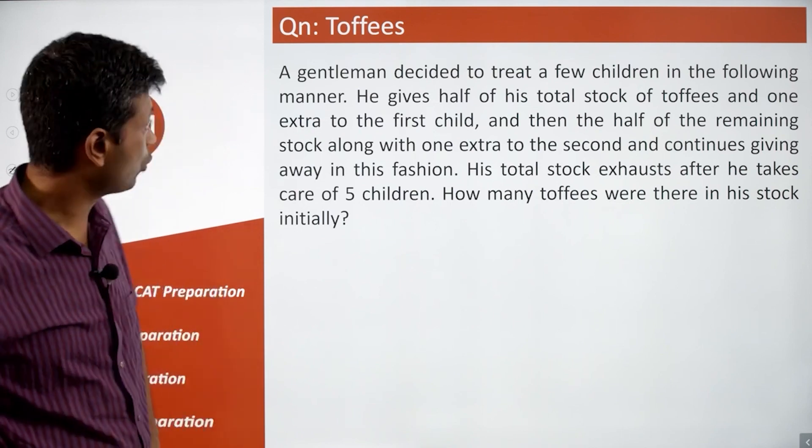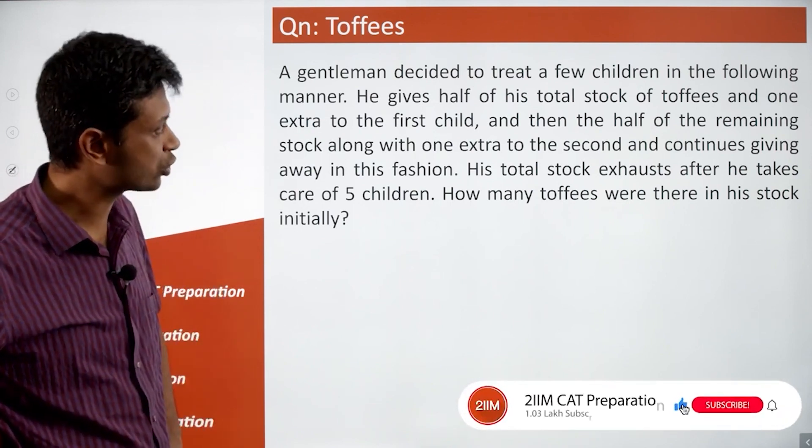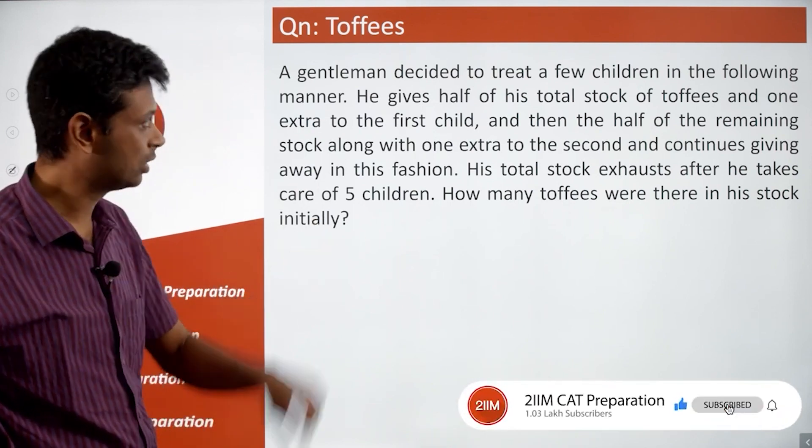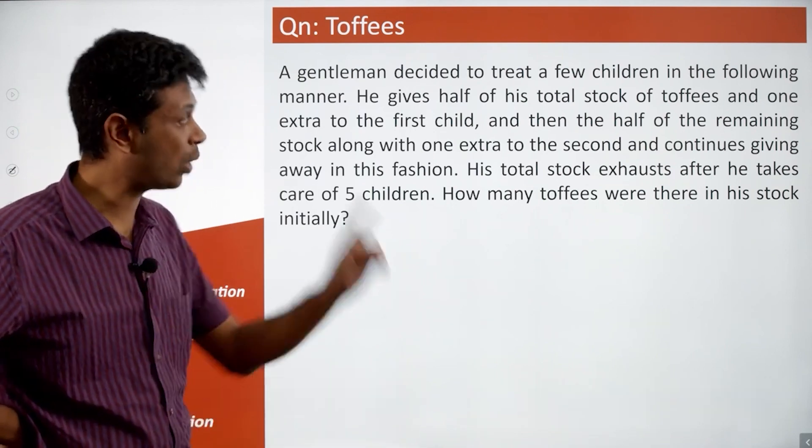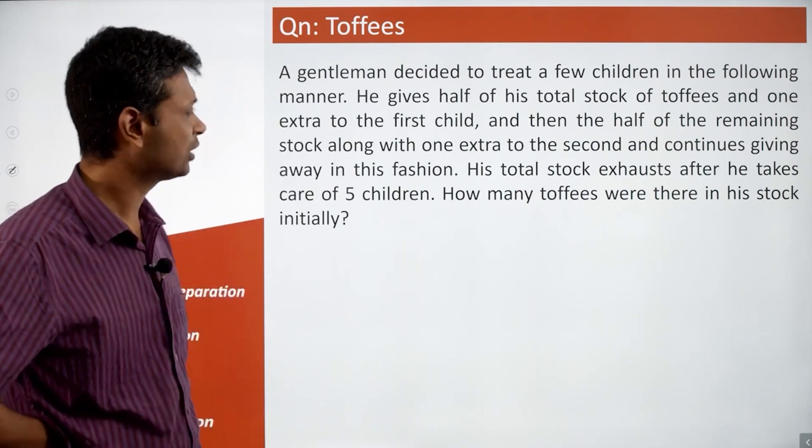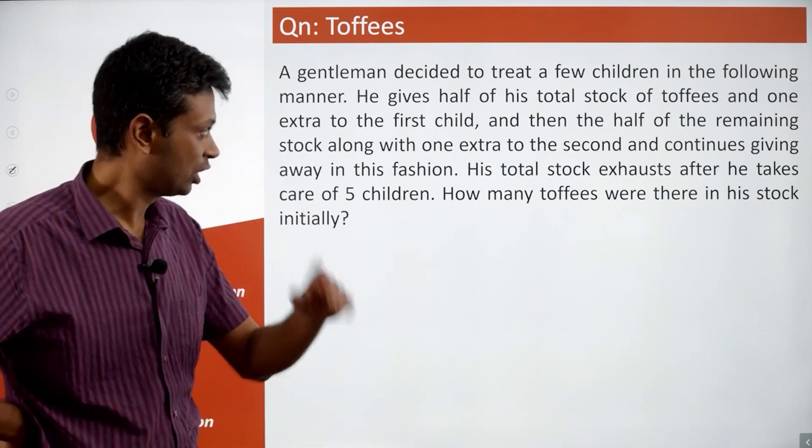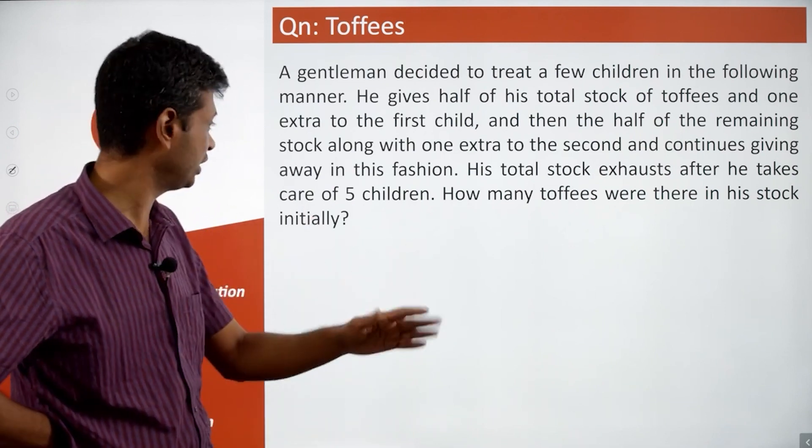A gentleman decided to treat a few children in the following manner: he gives half of his total stock of toffees and one extra to the first child, and then half of the remaining stock along with one extra to the second, and continues giving away in this fashion. His total stock exhausts after he takes care of five children. How many toffees were there in his stock?